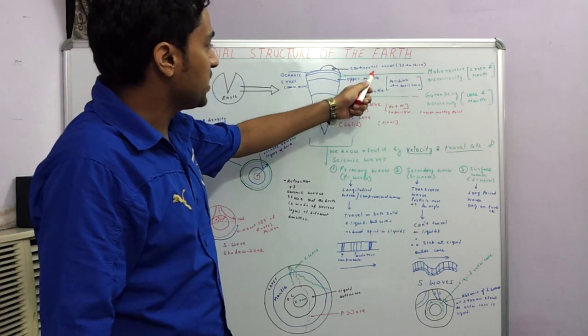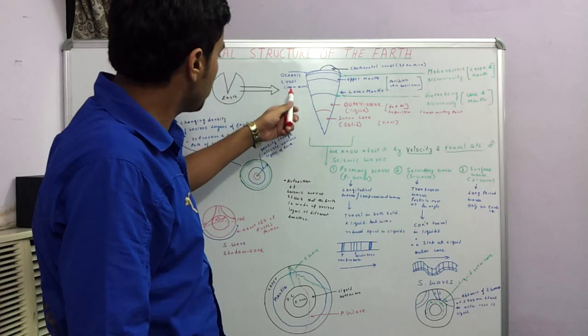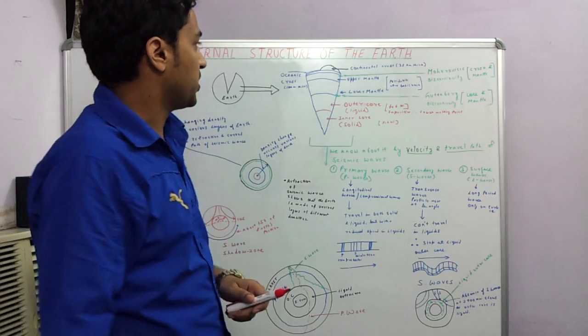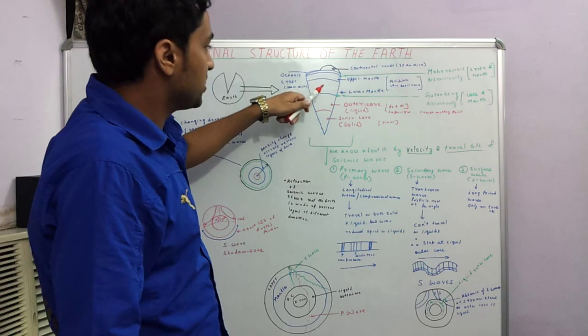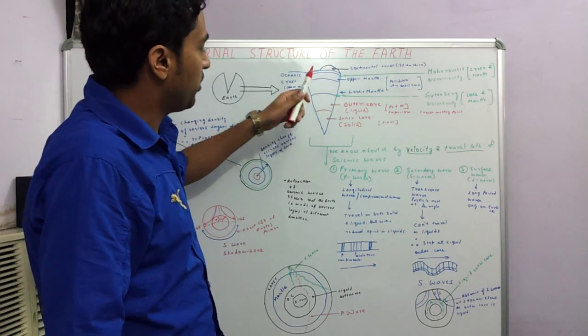The continental crust is thicker, about 35 km thick, whereas the oceanic crust is thinner, about 10 km thick. And below it is the mantle. The mantle can be divided into the upper mantle and the lower mantle.